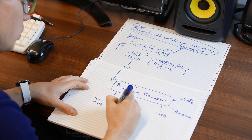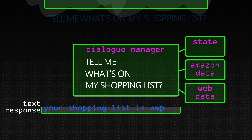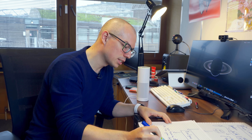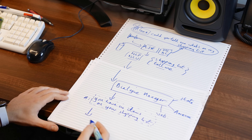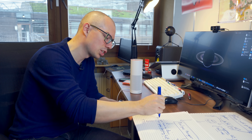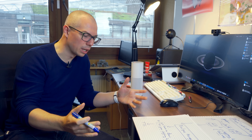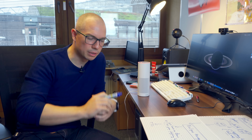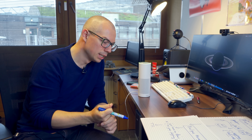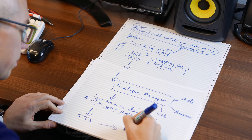Then it's generating a response, which might be: "you have no items on your shopping list." But that's just text output - it's got to say this. So the next stage is text to speech - it has to generate speech based on the text. "Your shopping list is empty." There's a whole complex area of research about how you actually go about doing that, which is again very sophisticated. And then it comes out of the device, the Echo, as the response, and we hear it.